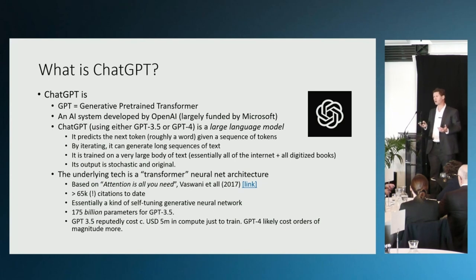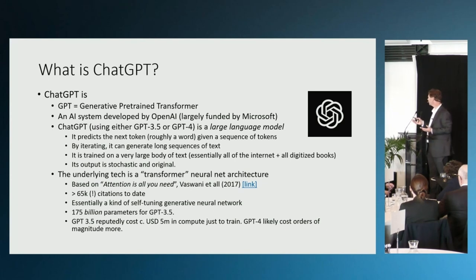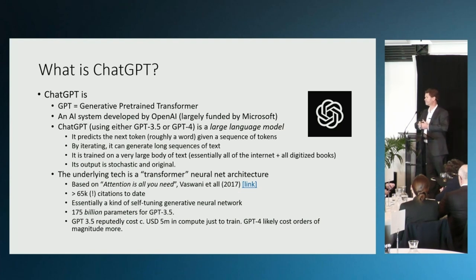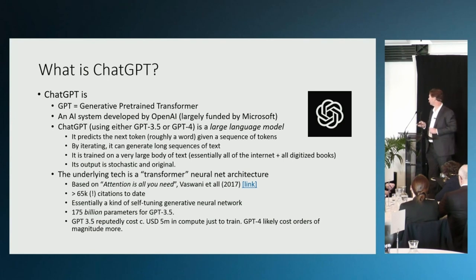These models are large. GPT-3.5 is about 175 billion parameters. We don't know how many parameters GPT-4 is — that is proprietary — but it's guessed at around 8 trillion. The training of GPT-4 reportedly cost in the order of 100 million US dollars, so not everybody can do this at home.